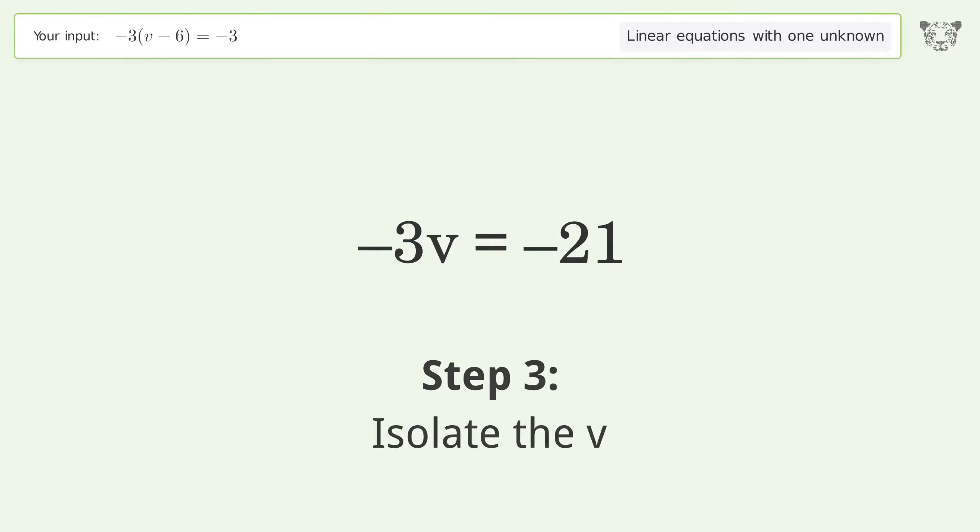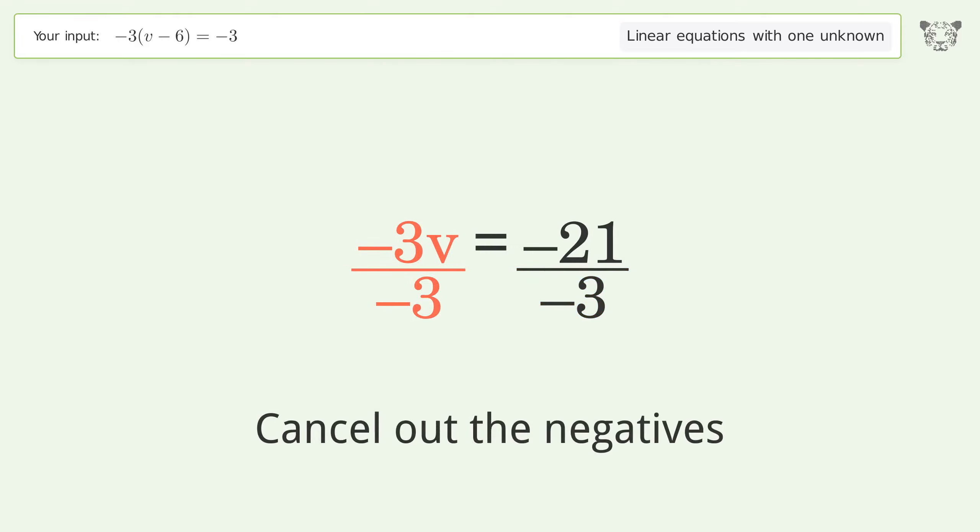Isolate the v. Divide both sides by negative three. Cancel out the negatives, simplify the fraction.